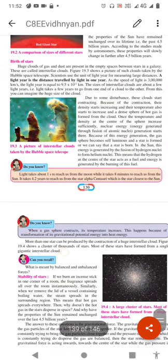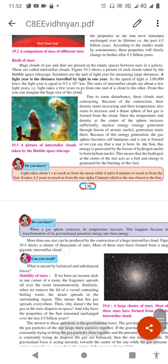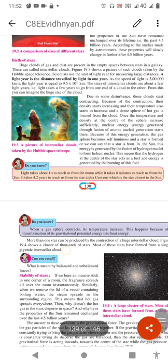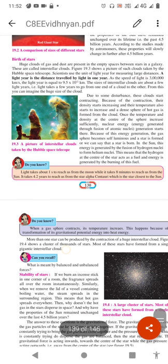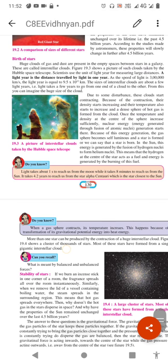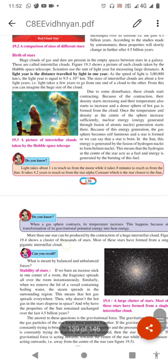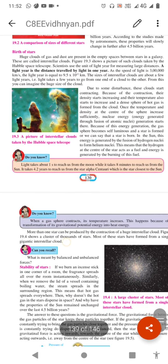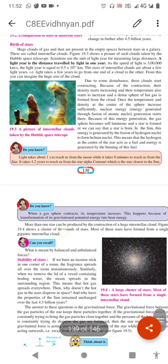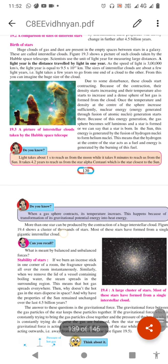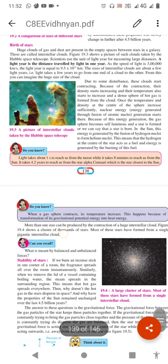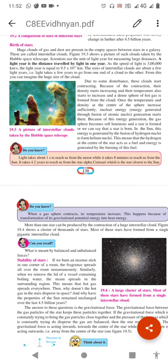Due to some disturbance, these clouds start contracting. Because of the contraction, their density starts increasing and their temperature also starts to increase. A dense sphere of hot gas is formed from the cloud. Once the temperature and density at the center of the sphere increase sufficiently, nuclear energy generation through fusion of atomic nuclei starts there. Because of this energy generation, the gas sphere becomes self-luminous and a star is formed, or we can say that the star is born.